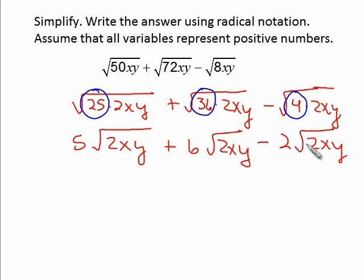Now when we look at these, we see I have like terms. I have 5 square root of 2xy's plus 6 more, which gives me 11 of them. But then I have to take away 2 of them, giving me 9 square root of 2xy.